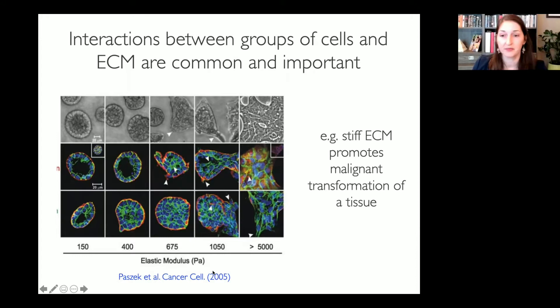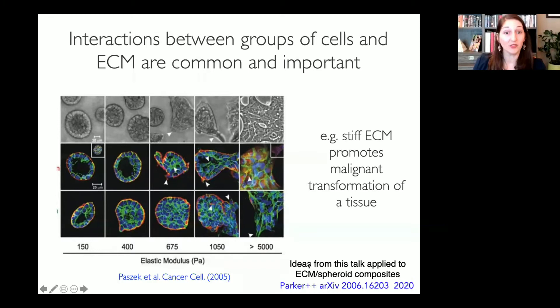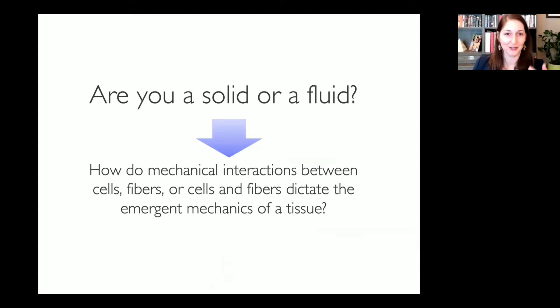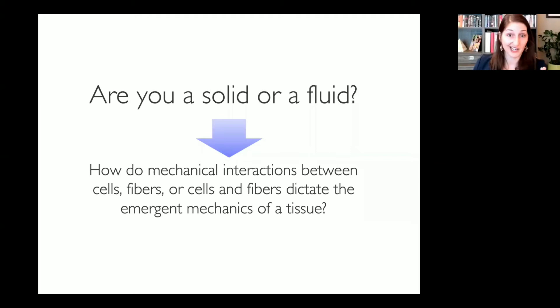We have some preliminary work on the archive about the interaction of cellularized tissue and ECM — both having fluid-solid transitions — led by Amanda Parker. So now we turn the big silly question into a real one: how do mechanical interactions between cells, fibers, or cells and fibers dictate the emergent mechanics of a tissue?